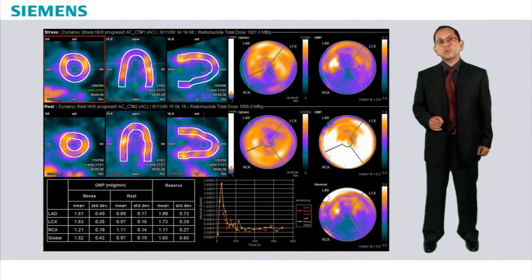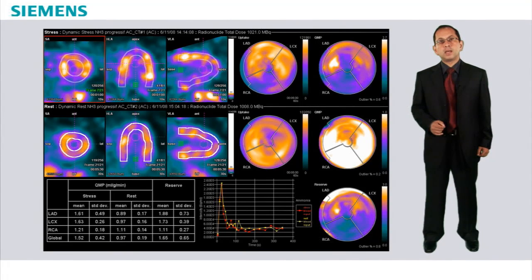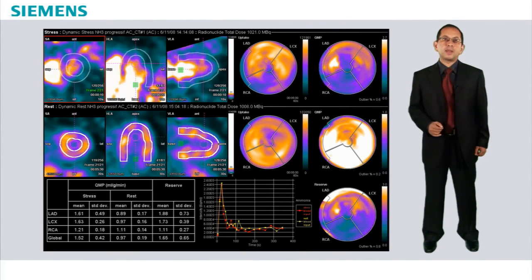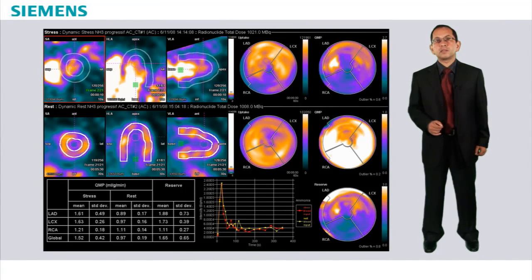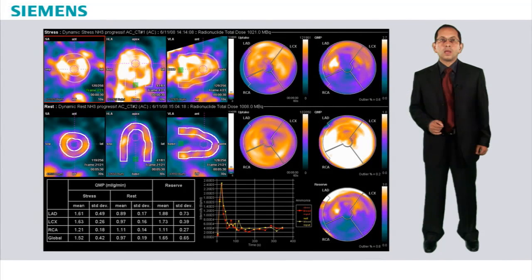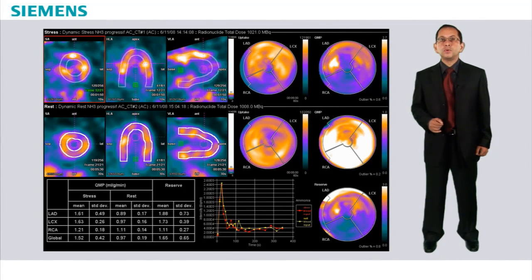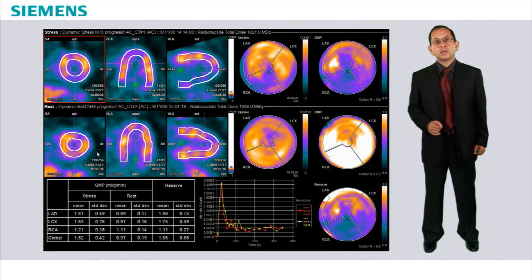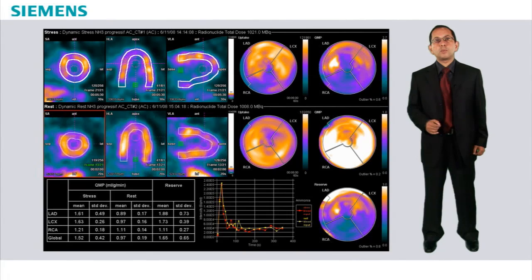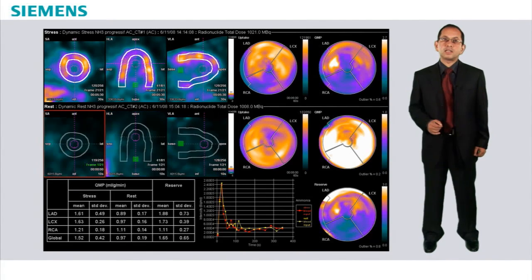We can also see the adequacy of the bolus by looking at the individual dynamic frames. Here we see the initial tracer transit in the right ventricle, then the left ventricle. Over the next frames we see the gradual diffusion of the tracer into the left ventricular myocardium. The individual frames can likewise be checked in the resting study.